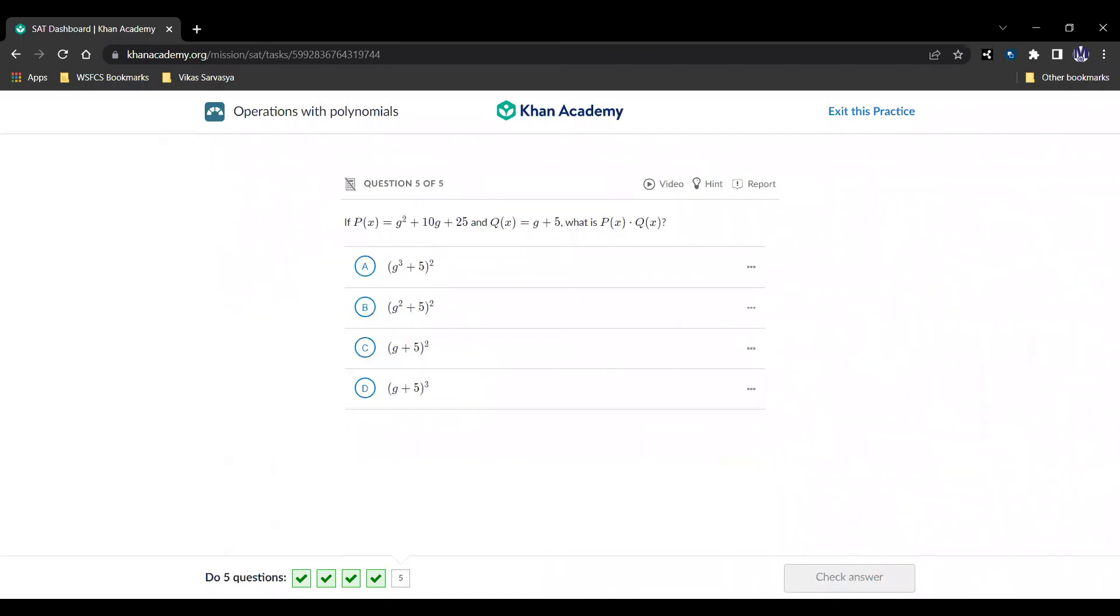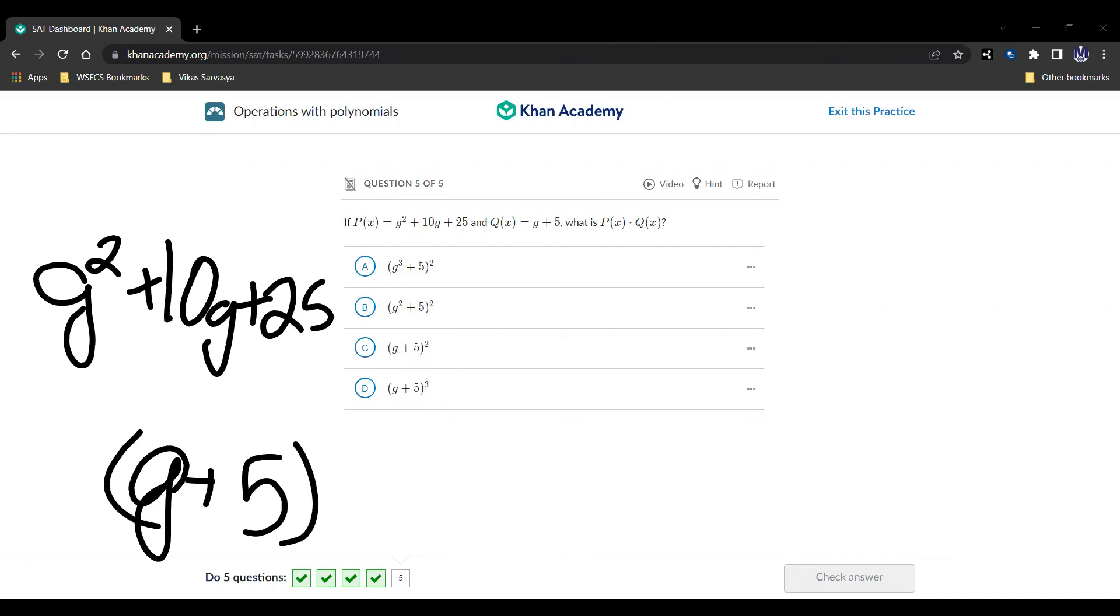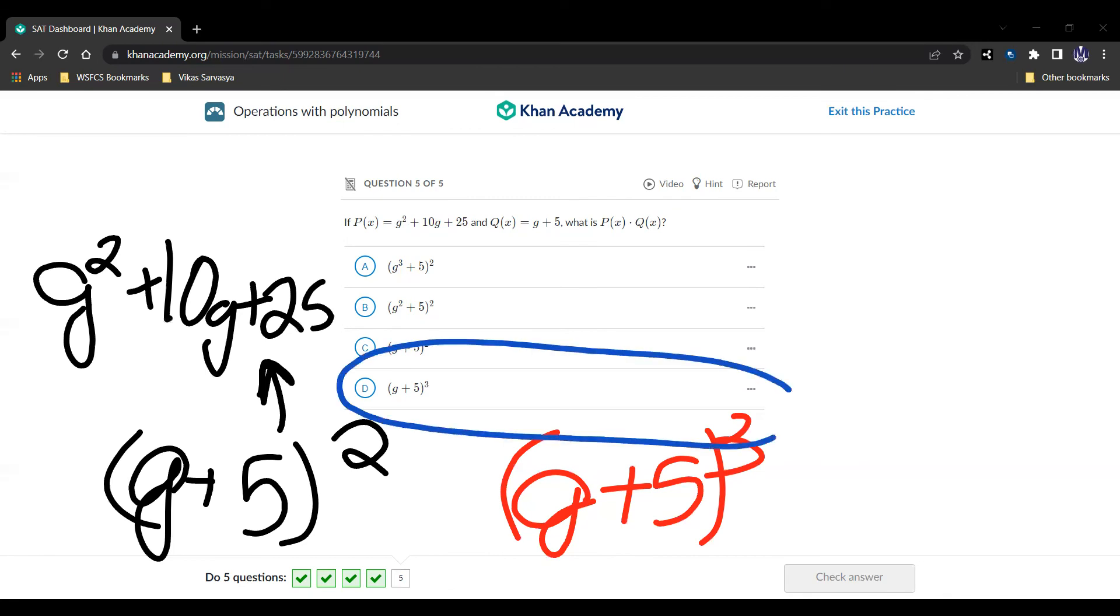Alright, question five. Here it is. If p of x equals g squared plus 10g plus 25 and q of x equals g plus 5, what is p of x times q of x? Well, I need to say that g squared plus 10g plus 25 looks like g plus 5 squared, right? We can multiply this out and we get exactly that. And then multiply that by another g plus 5, which is just going to lead to g plus 5 to the third, which of course is answer choice D, and that is our answer.